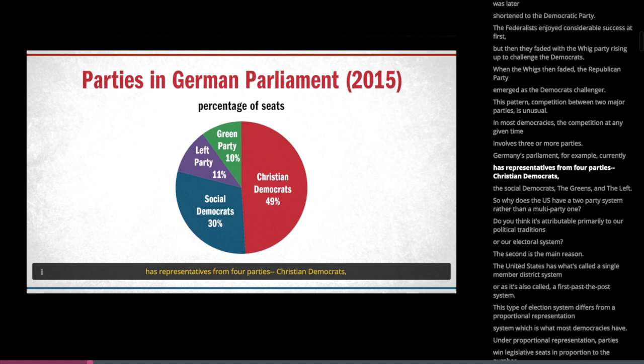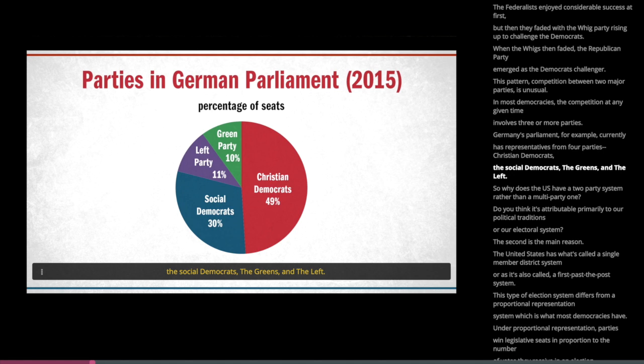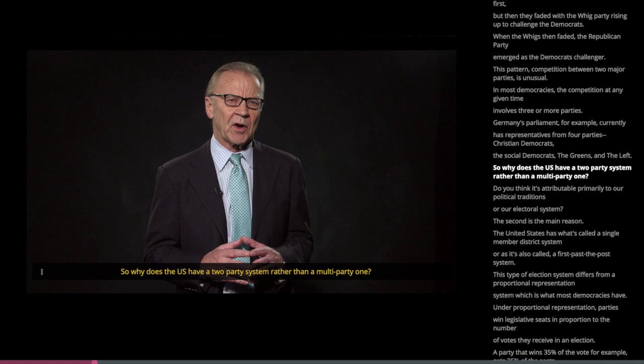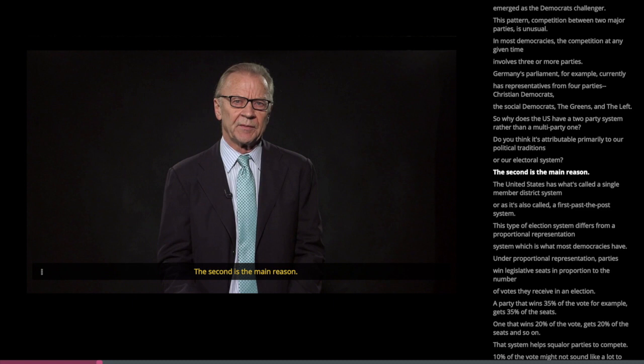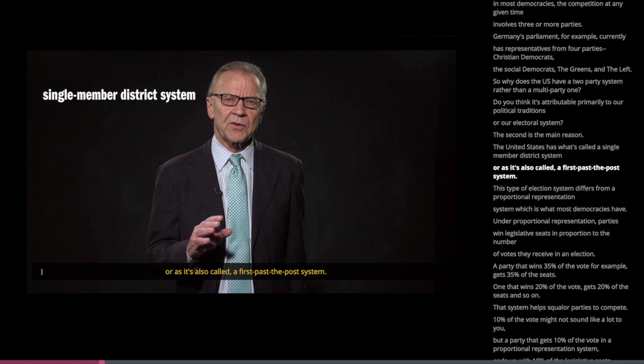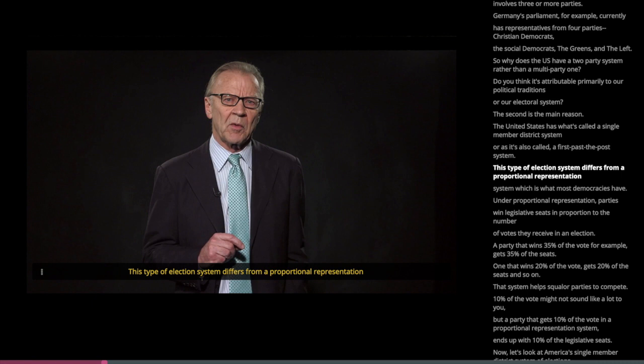So why does the US have a two-party system, rather than a multi-party one? The electoral system is the main reason. The United States has what's called a single-member district system, or first-past-the-post system. This type of election system differs from a proportional representation system, which is what most democracies have. Under proportional representation, parties win legislative seats in proportion to the number of votes they receive in an election.